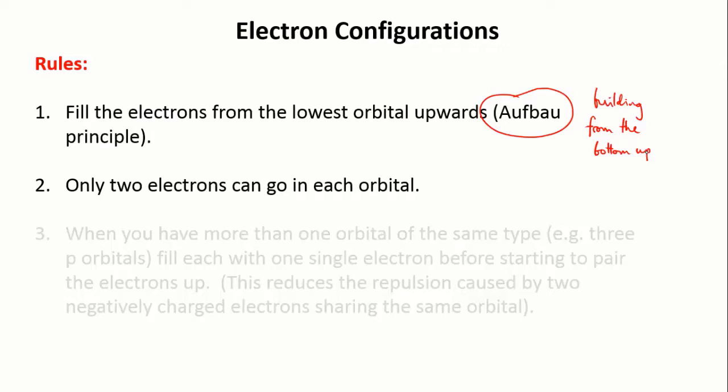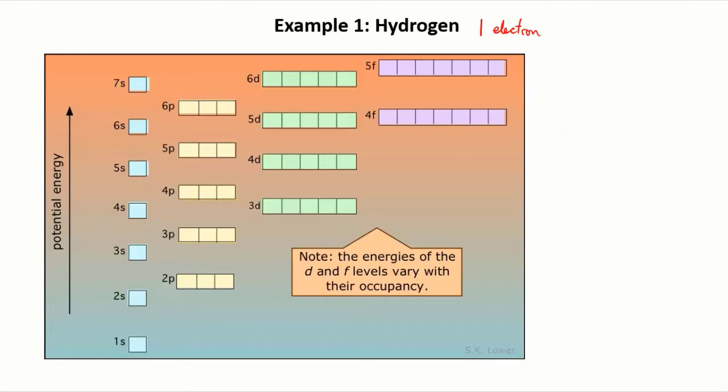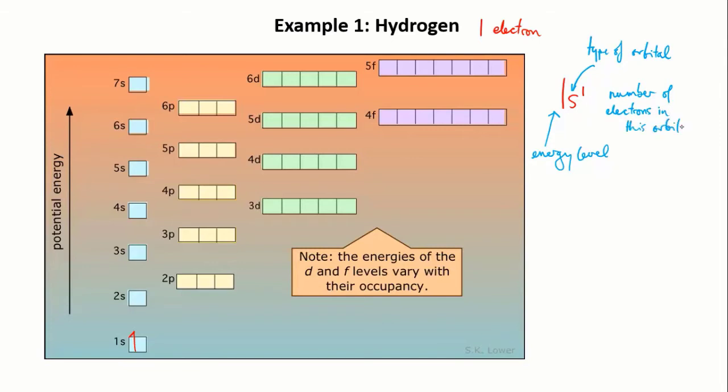So let's try a few examples using these two rules. First, let's try hydrogen. This is pretty easy. It's got one electron and we follow the first rule and put it in the lowest possible orbital, which is the 1s orbital. The electron is depicted as an arrow in the orbital. To write the electron configuration in shorthand, we write 1s1. The first one indicates the energy level, the s indicates the kind of orbital, and the little one tells you that there is one electron in that orbital.